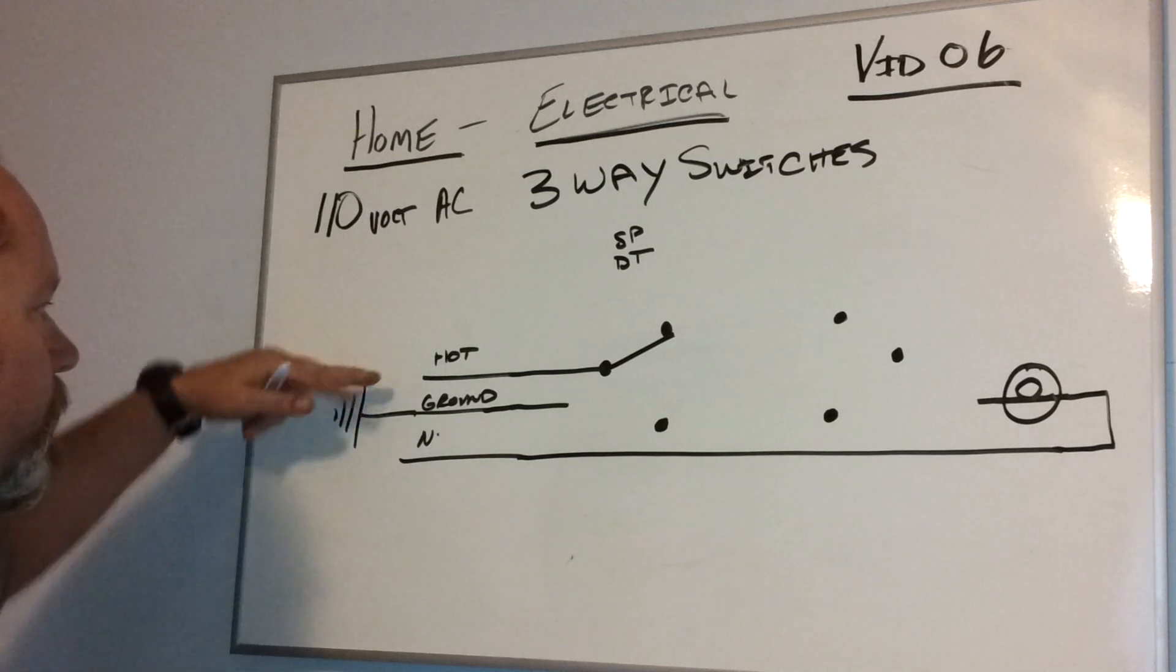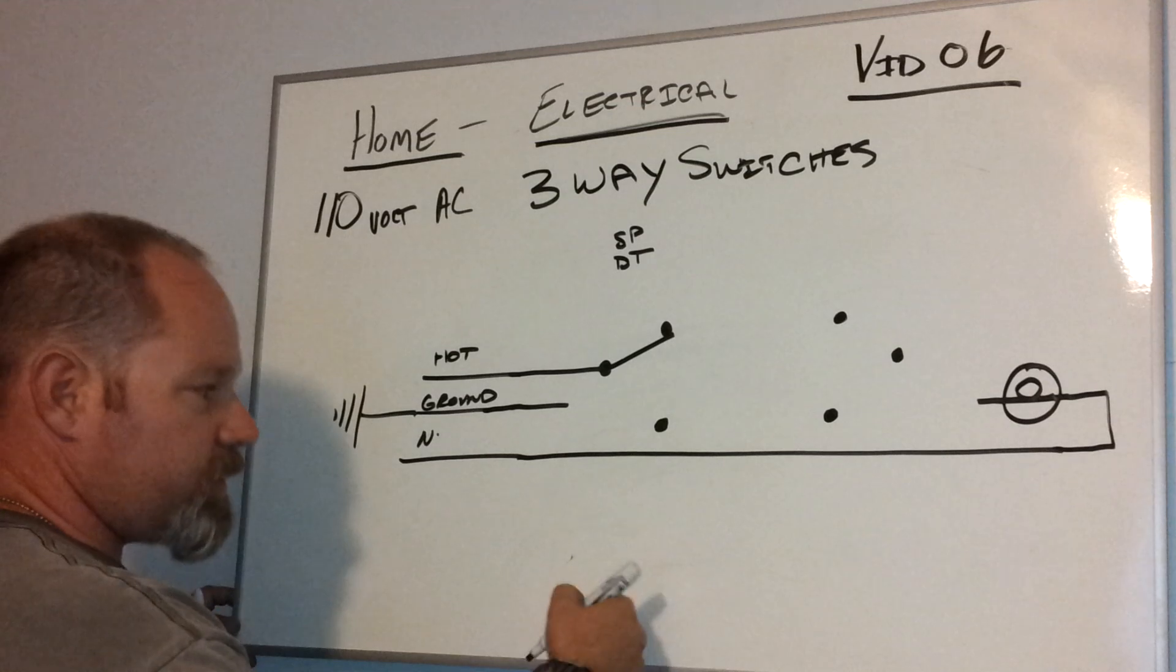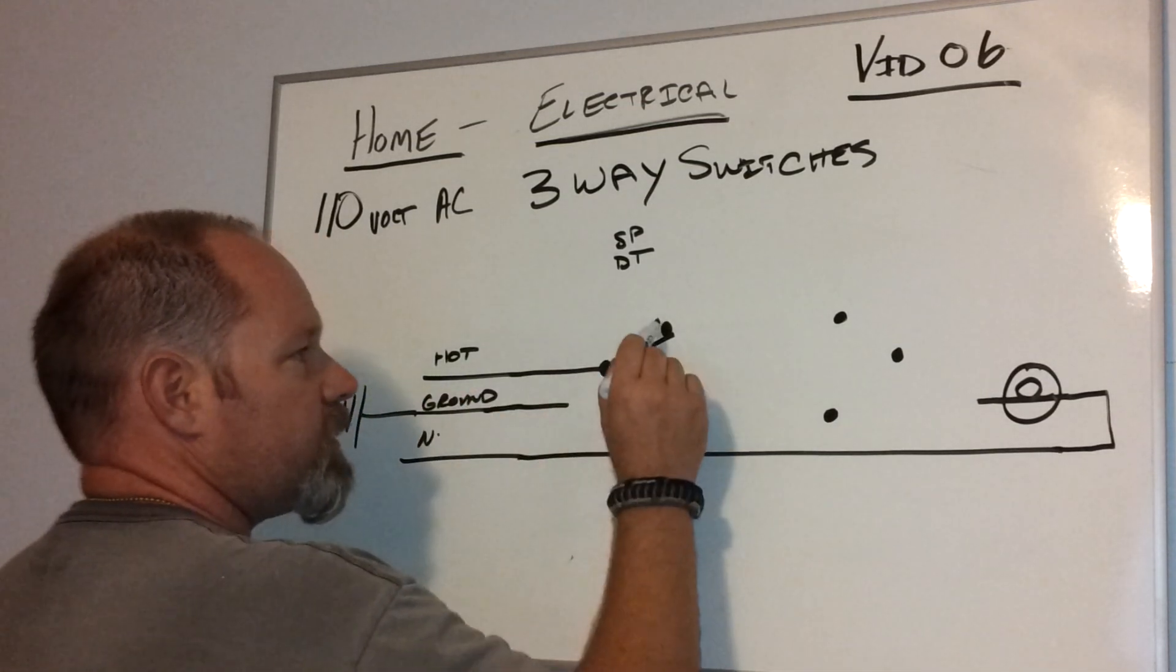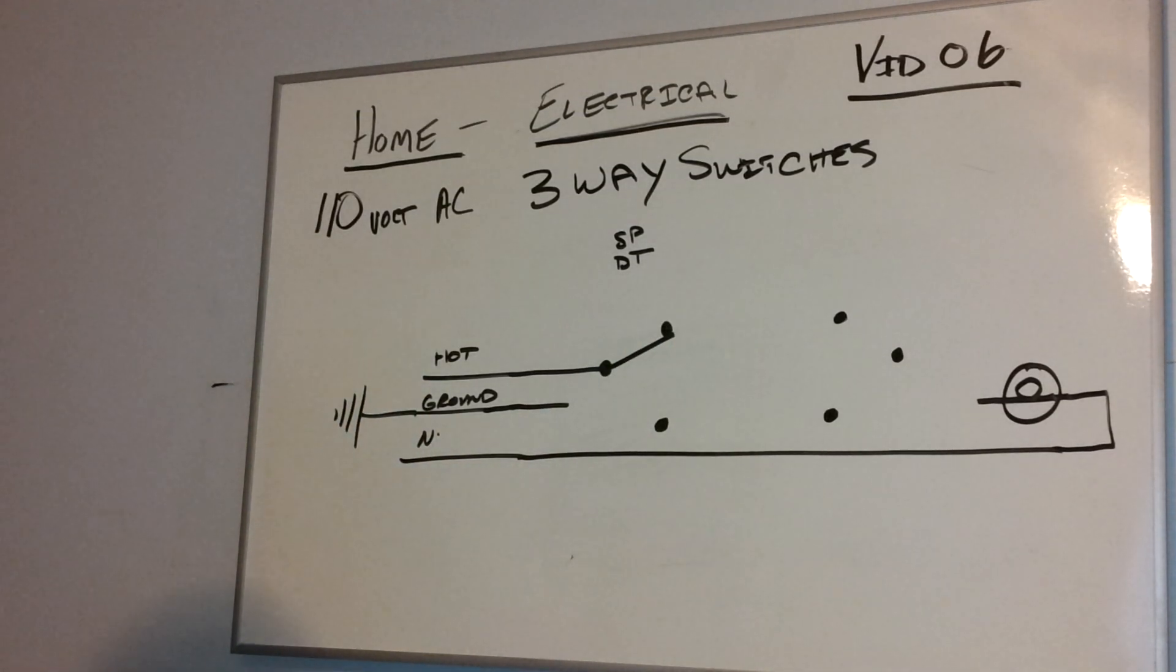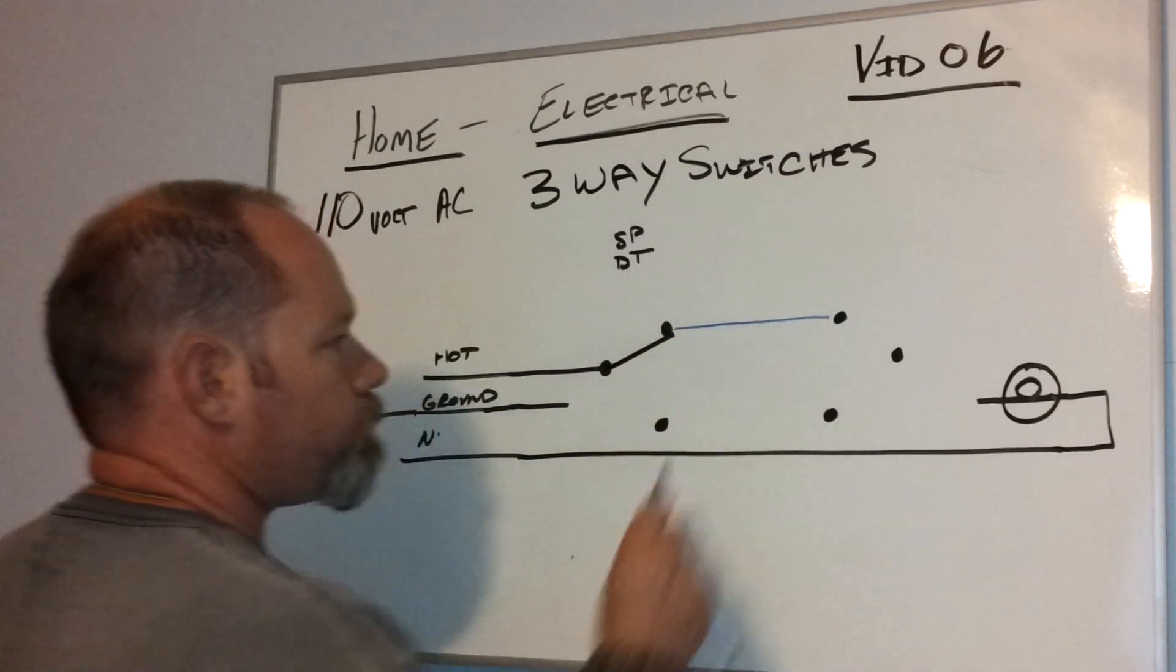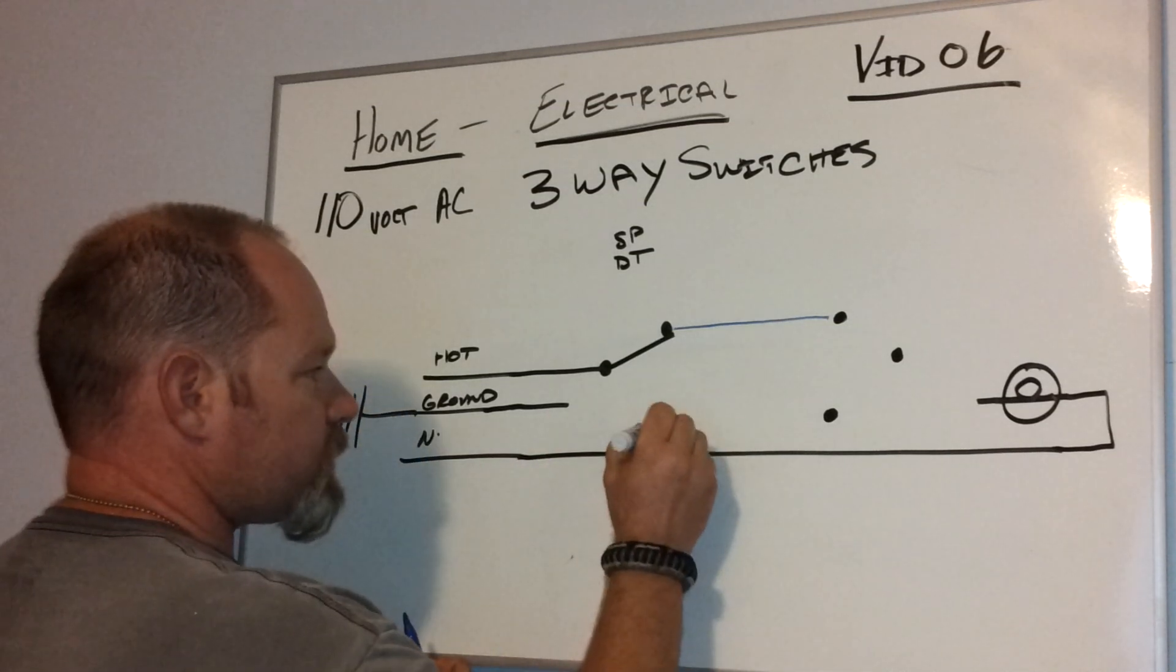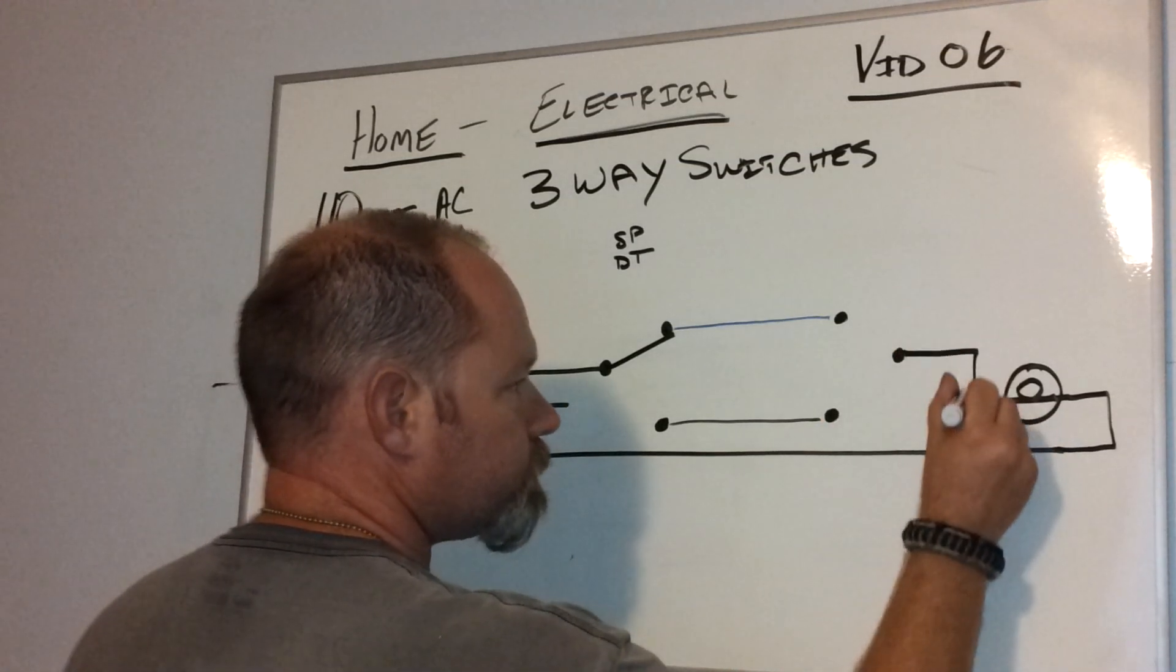Now, your hot's coming to here, and this is a regular, I'm going to indicate this light switch here. It's a regular light switch, up or down, and this one's going to be up or down. So if you have it in one position, the power goes up here, and I'm going to draw that in a different color. And then this one's going to be another color, and then this is going to go to here.